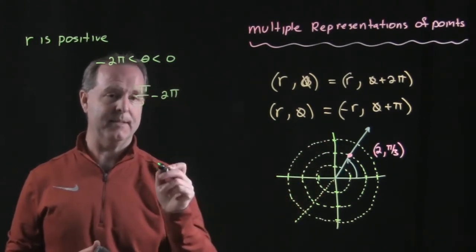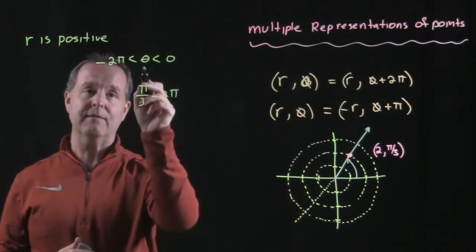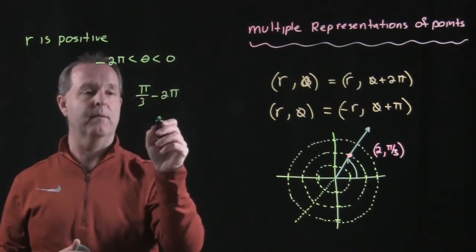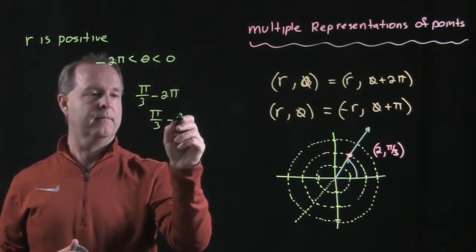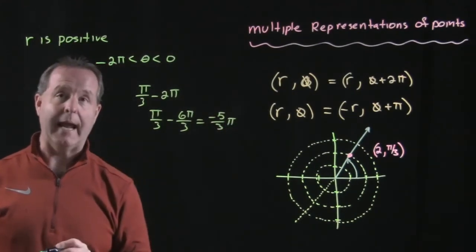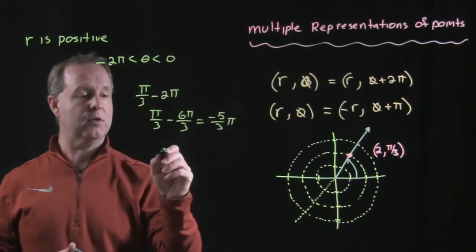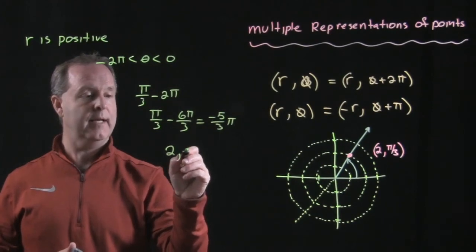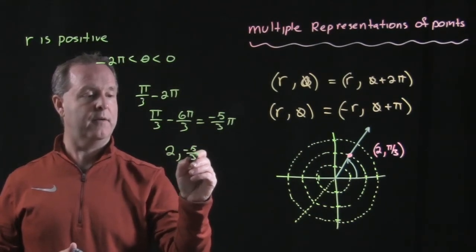I'll wind back up at that position, but with a negative angle between -2π and 0. So there's my new angle, my r is positive, so my new position is (2, -5π/3).